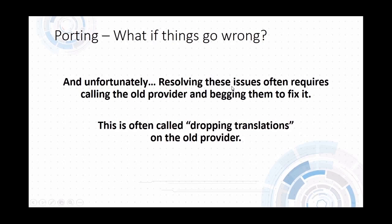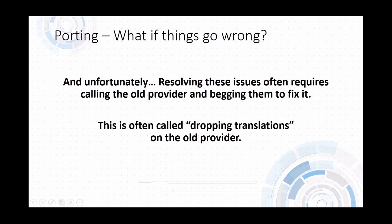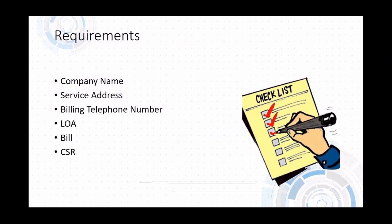This is why we often ask for example numbers — we're trying to figure out what the commonality is between numbers that cannot call versus the ones that can reach. A lot of the time it requires a phone call to the old provider — and literally begging them to fix it. It's often called 'dropping translations' on the old provider, meaning they have to remove the number from their equipment before other customers on that equipment can call it.